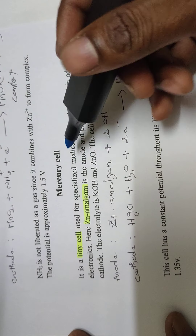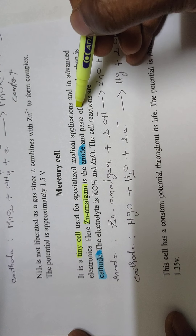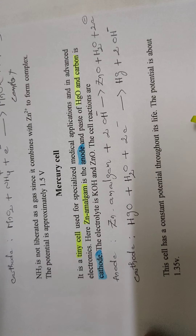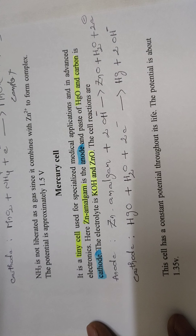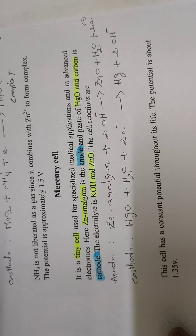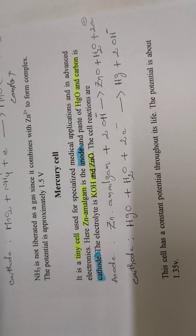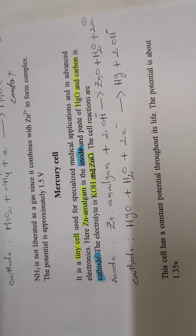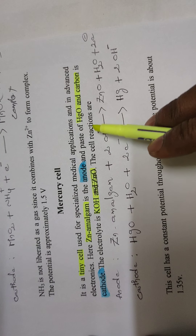In the mercury cell, the anode is zinc amalgam and the cathode is HgO (mercury oxide) mixed with carbon powder. The electrolyte is KOH. The anodic half-cell reaction involves zinc amalgam reacting with OH⁻ ions from the KOH electrolyte.